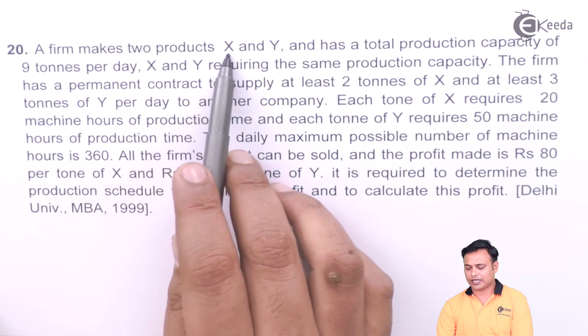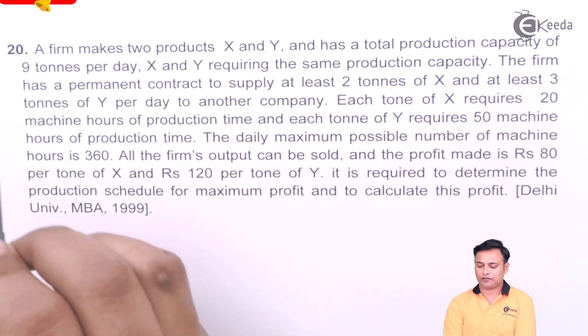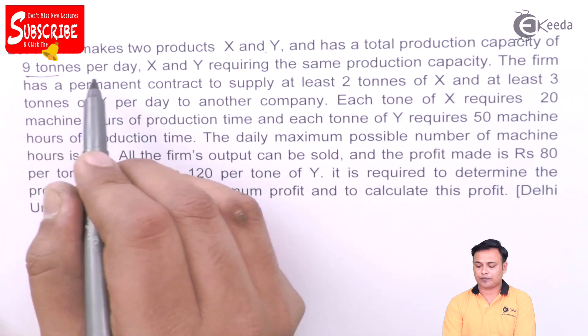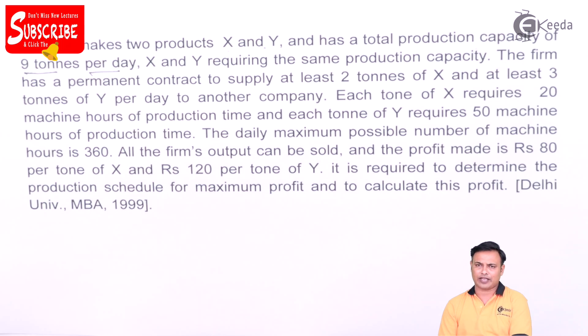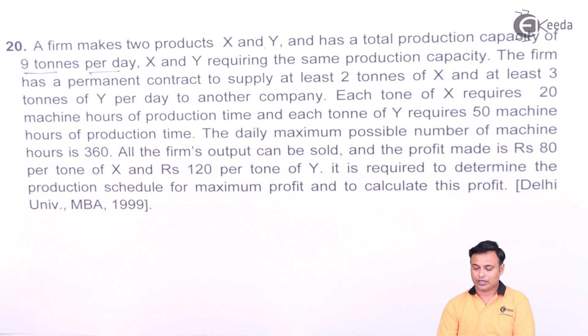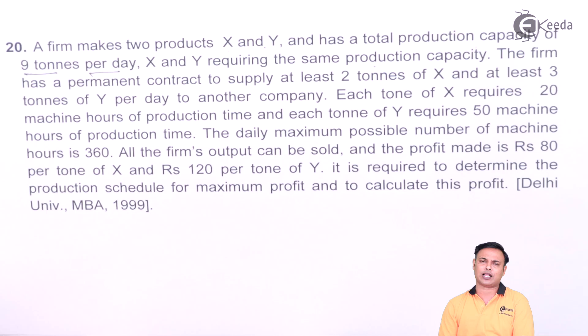A firm makes two products X and Y and has a total production capacity of 9 tons per day. So the total production of X plus Y every day cannot be more than 9 tons. X and Y requiring the same production capacity, so both are produced or manufactured on the same machines or the same setup.